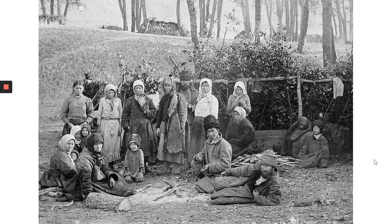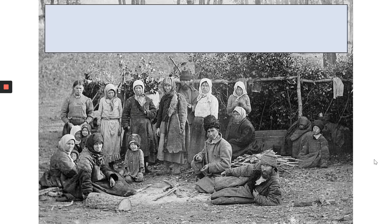Next, we're going to look at the very opposite of the social scale in Russia. These are the Russian serfs — Russian peasants, the very poorest working people in Russia. Their lives couldn't really have been much more different to those of the Romanov family. The serfs lived in extremely difficult living conditions. They owned very little and lived in great poverty. They had to work really hard to farm land that actually belonged to wealthy noblemen. Since 1650 in Russia, serfs were forbidden to leave the land owned by their masters, obliged to live and work all their lives on the land provided by the people that owned them. They were effectively slaves.